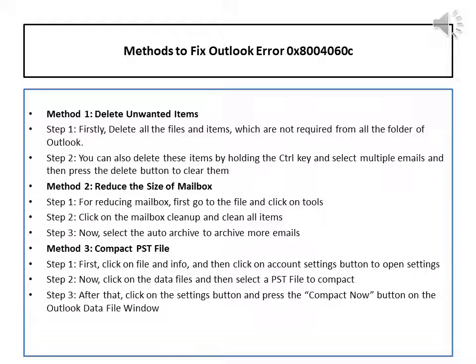Method 3: Compact PST File. Step 1: First, click on File and Info, then click on the Account Settings button to open Settings. Step 2: Now click on Data Files and select a PST file to compact. Step 3: After that, click on the Settings button and press the Compact Now button on the Outlook Data File window.